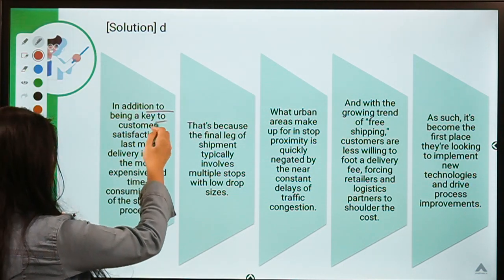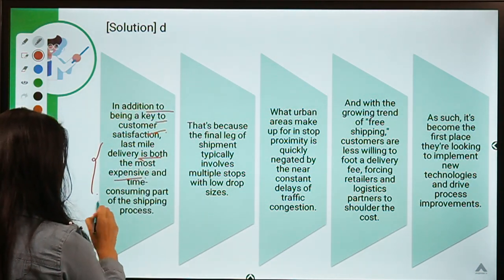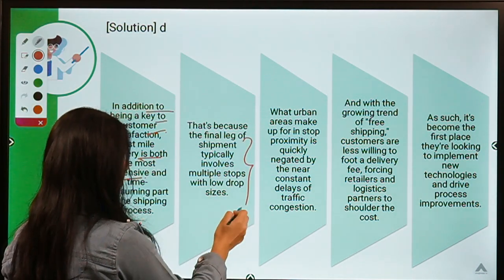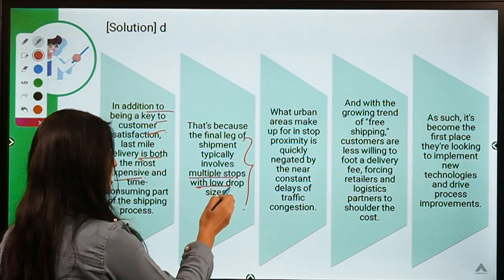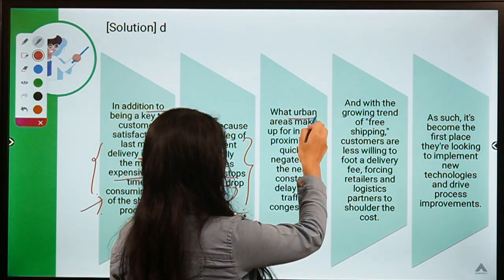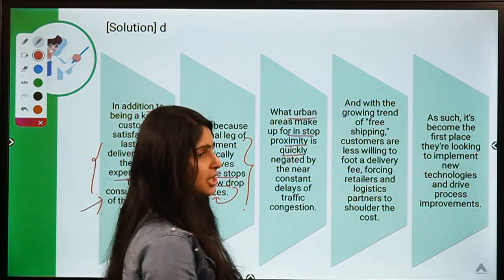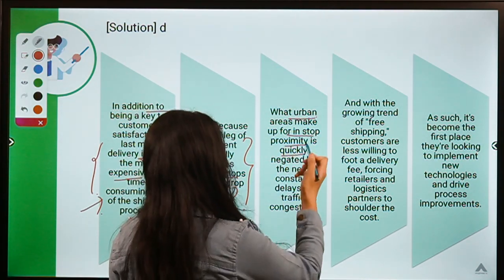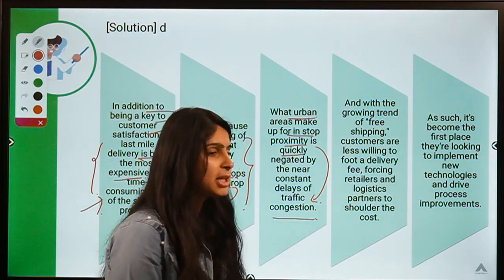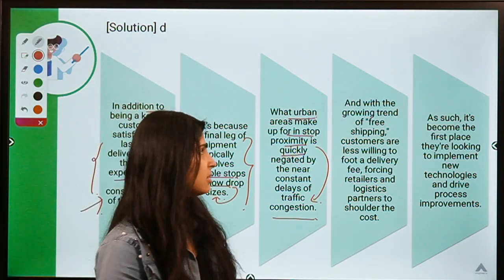In addition to customer satisfaction, last mile delivery is both the most expensive and most time-consuming part of the process. The final leg of shipment involves multiple stops with low drop sizes. In urban areas proximity is quick because connectivity is easy, but that can be negated by traffic, which can hamper transportation.